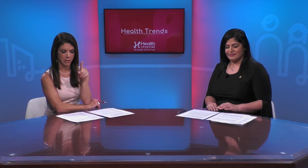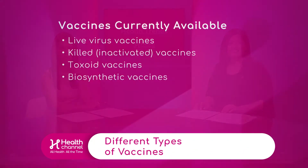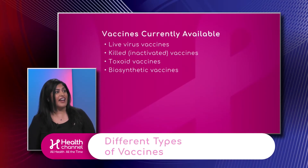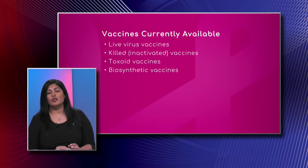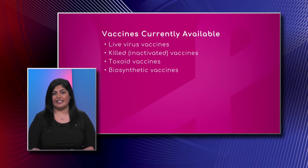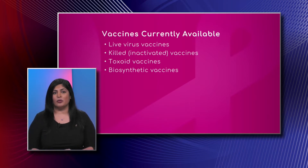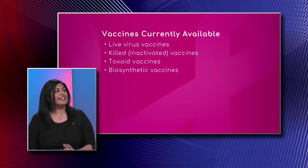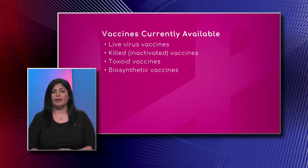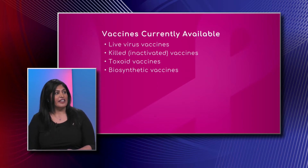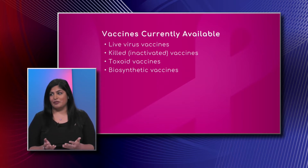Let's go down a list of currently some vaccines that are available today. You just mentioned one, doctor, which was the killed inactivated vaccine — let's take the first one. A live virus vaccine has a little bit of a weakened virus in it, and a good example of that would be the chickenpox vaccine, or varicella. The killed or inactivated vaccines have a component of the germ and it's not a live virus or bacteria, and a good example of that would be the flu vaccine.